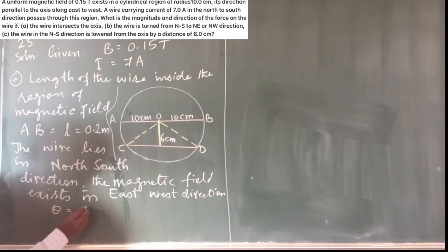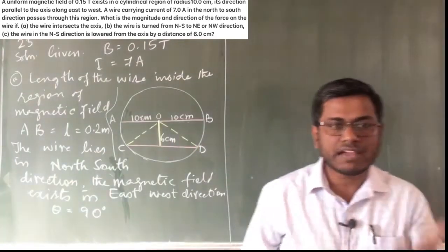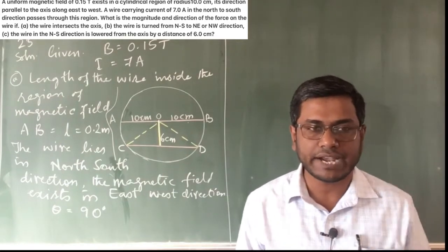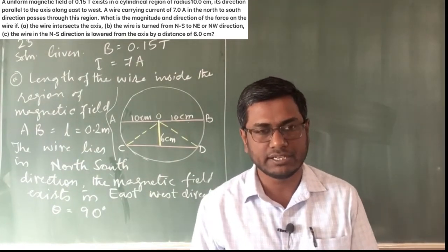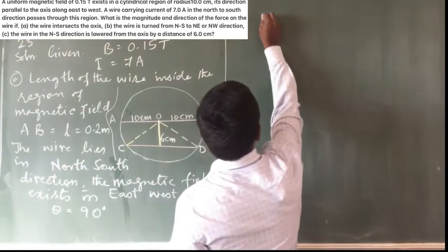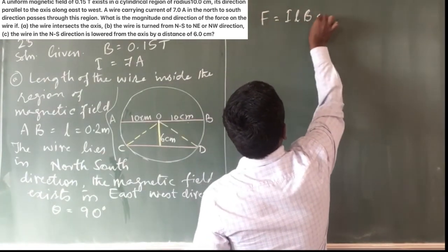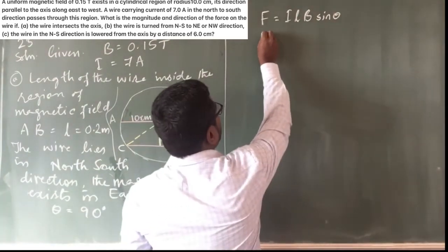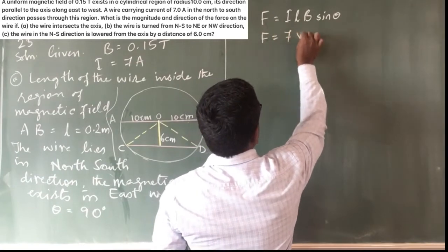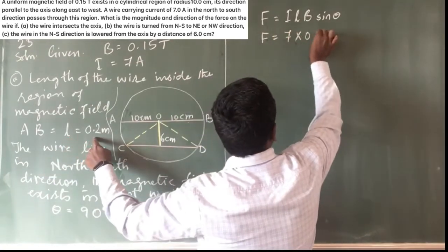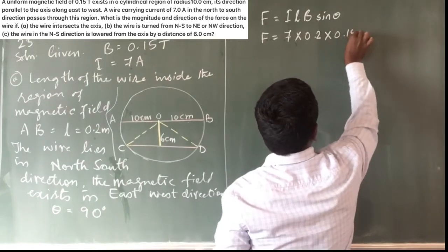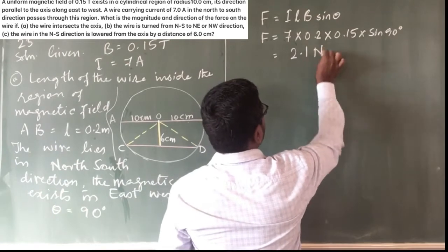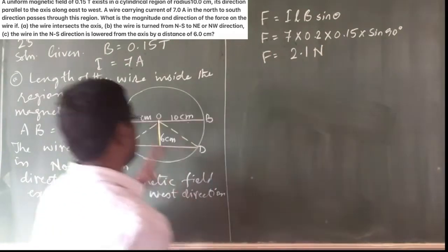Since the wire is perpendicular to the magnetic field, we use the force equation: F = ILB sinθ. Substituting values: F = 7 × 0.2 × 0.15 × sin 90° = 2.1 Newton. That is the force on the current-carrying conductor.